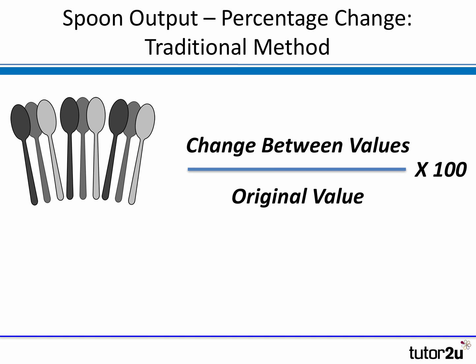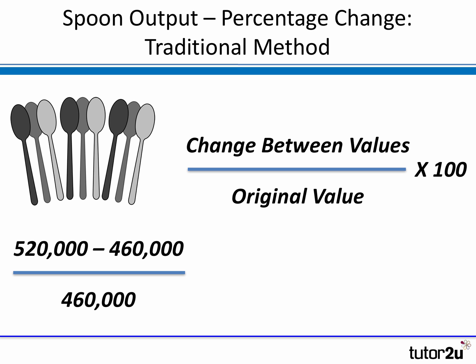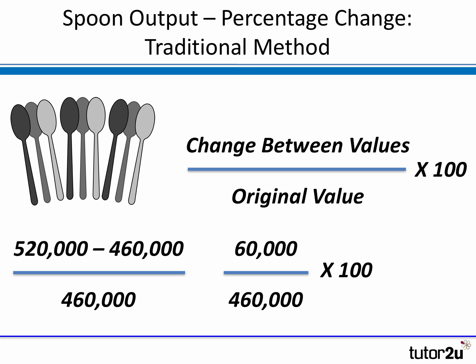Let's use the traditional method first. We have to calculate the change between the two values and then divide by the original value. So we had 520,000 as the new value — it's an increase because the previous month was 460,000 spoons — and we divide by the original value, which is 460,000. That gives us 60,000, which is the change, divided by 460,000. To express that as a percentage, we multiply by 100, and that gives us 13.0% — a 13% increase in the quantity of spoons made.